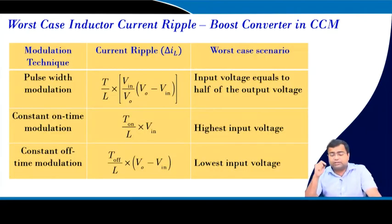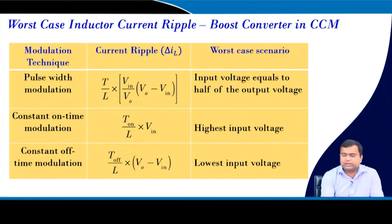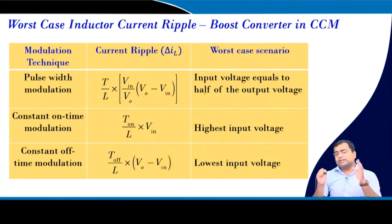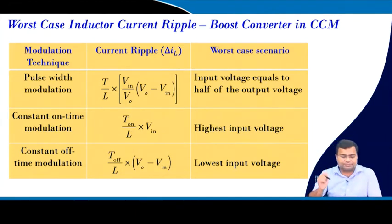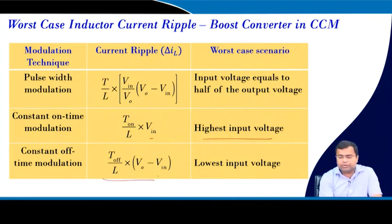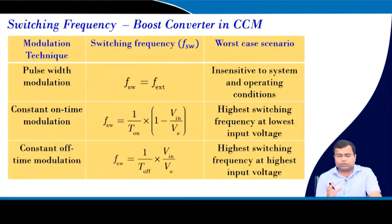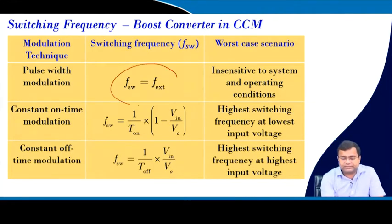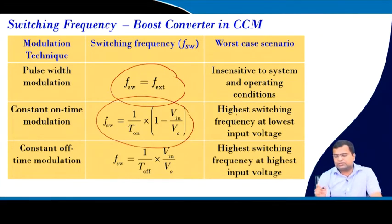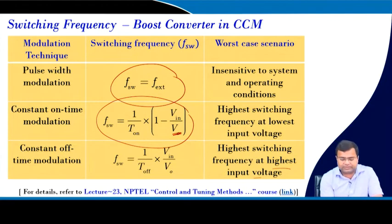The worst-case current ripple for the boost converter under CCM with PWM is worst when the input voltage is half the output voltage. Under constant on-time it is maximum when the input voltage is maximum, and under constant off-time it is maximum at the lowest input voltage. Regarding switching frequency: under fixed frequency it is fixed; for variable frequency, the highest switching frequency occurs at the lowest input voltage, as discussed in lecture 23.